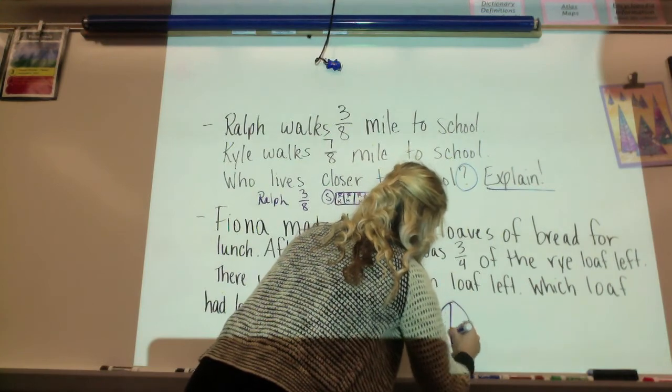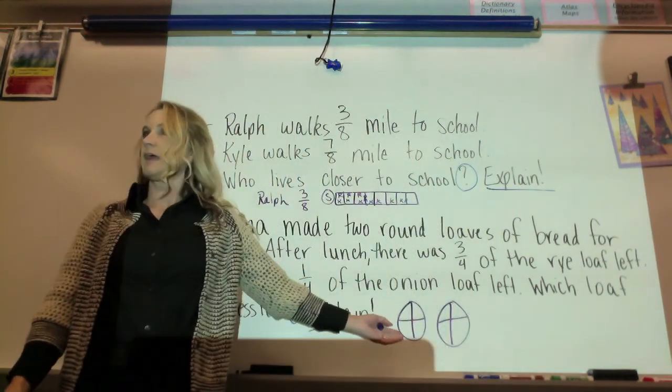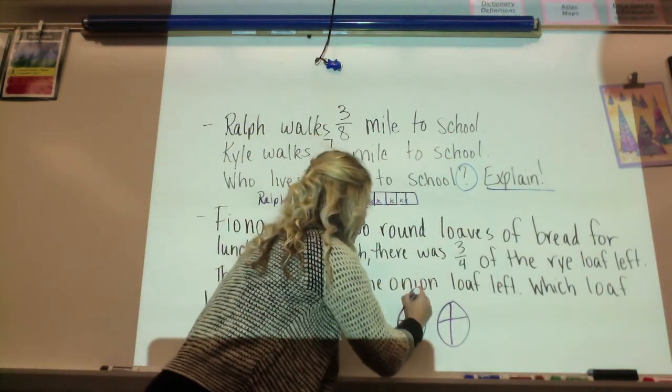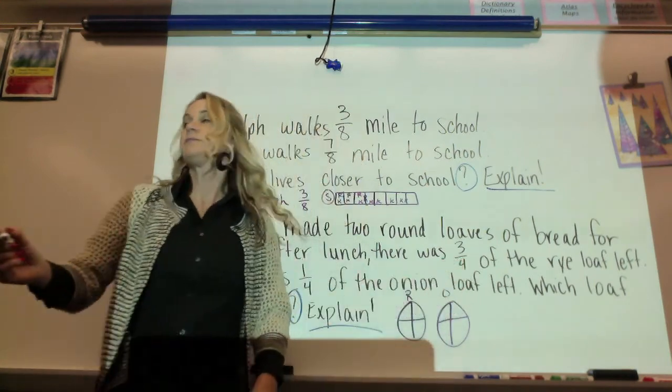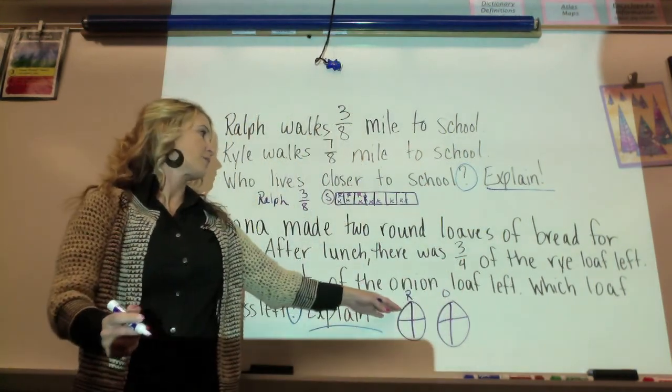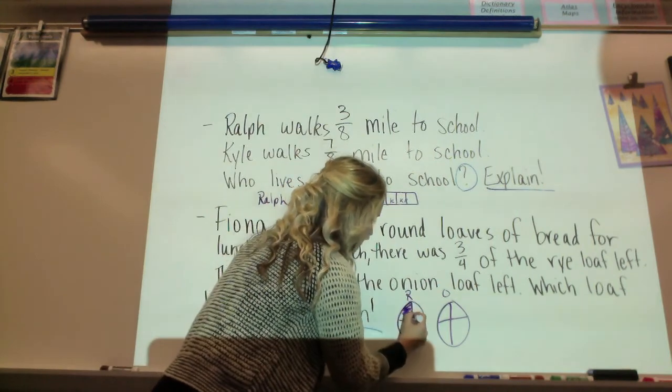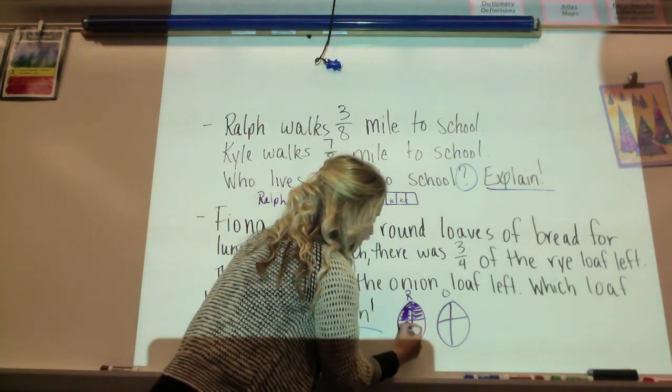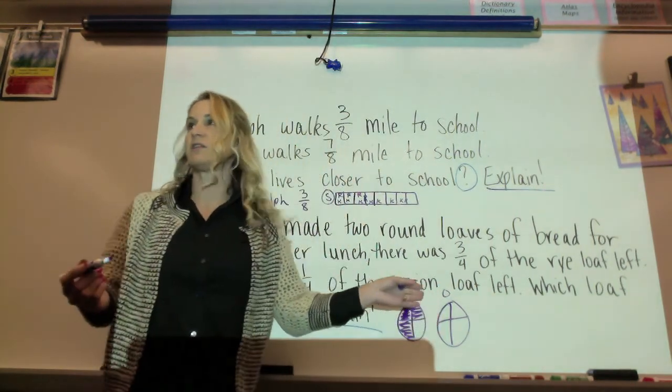They were both divided into fourths. One will make this one the rye one, and that one the onion one. How many pieces of rye were left? Three-fourths. So I'm going to shade those three. And how many of the onion were left?